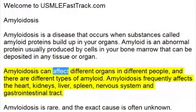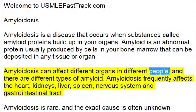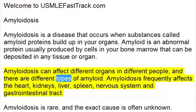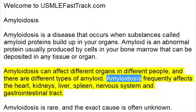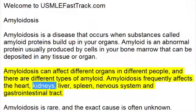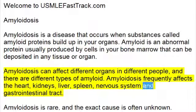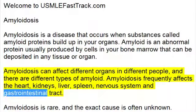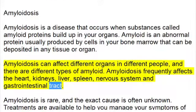Amyloidosis can affect different organs in different people, and there are different types of amyloid. Amyloidosis frequently affects the heart, kidneys, liver, spleen, nervous system, and gastrointestinal tract.